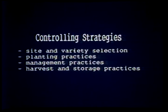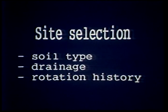The first being site selection. Site selection can be broken into three major areas. Using your knowledge of soil types in a field, drainage or soil moisture within a field, and rotation history of a field can help you minimize or eliminate disease problems.